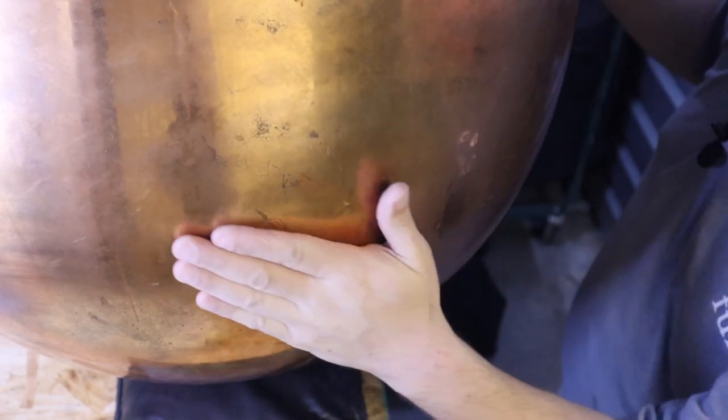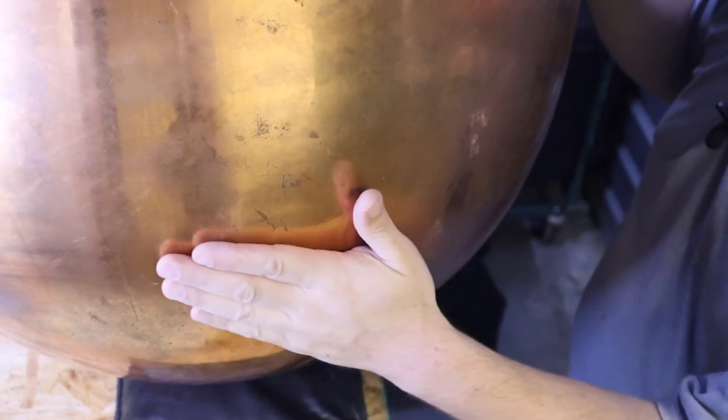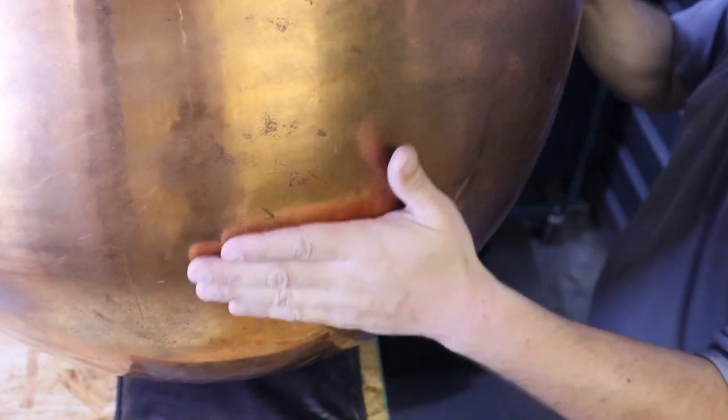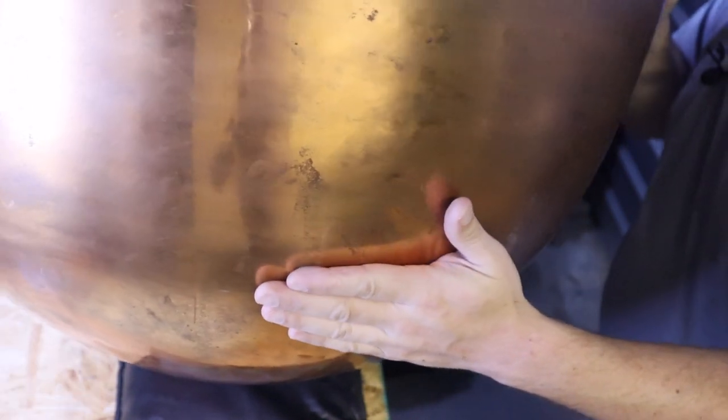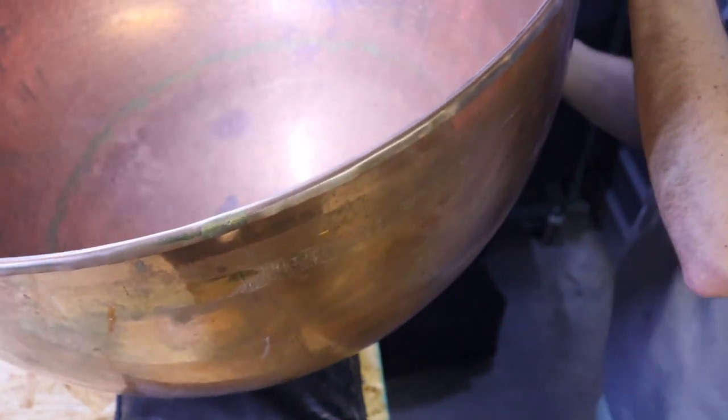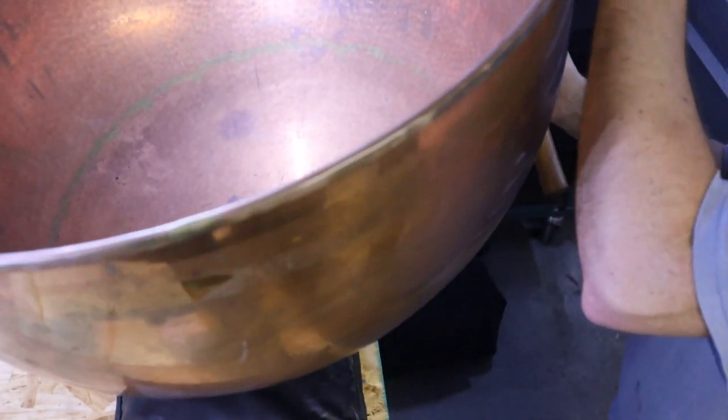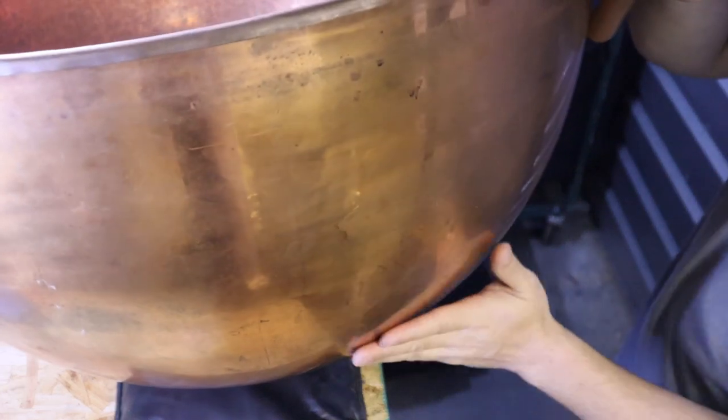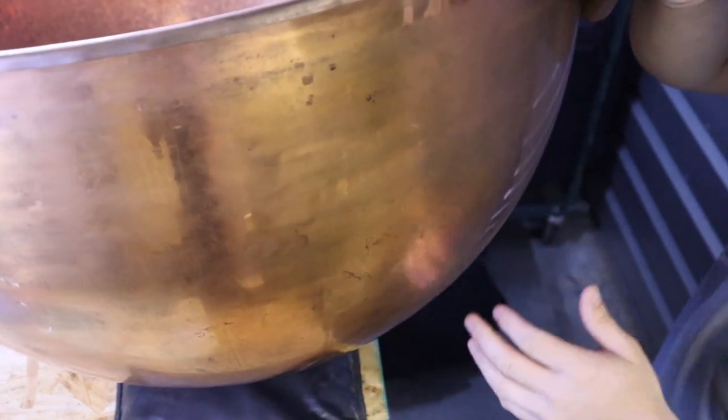But for now I'd say the dent is just about out. I'm gonna do just a little bit more work from the outside because I think I popped it out just a tad more than I'd like. Yeah, I think it's just gonna have that scar and that's fine, but the shape of the bowl is good.